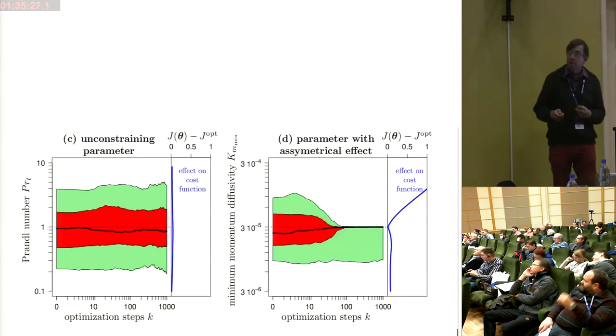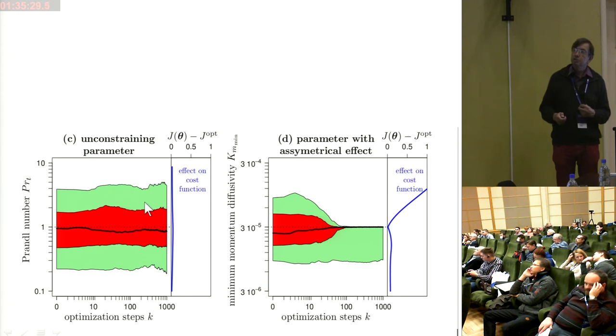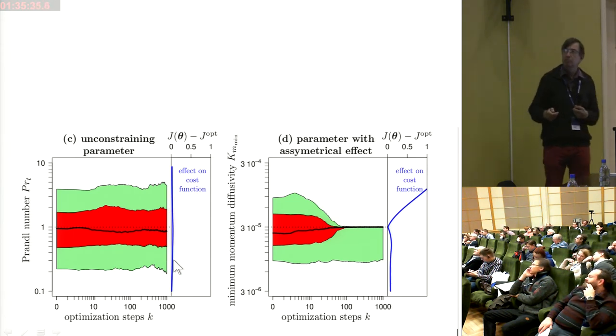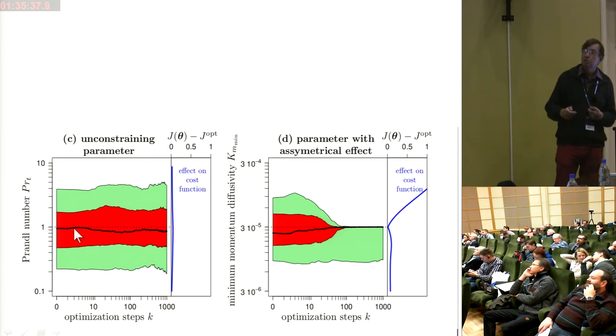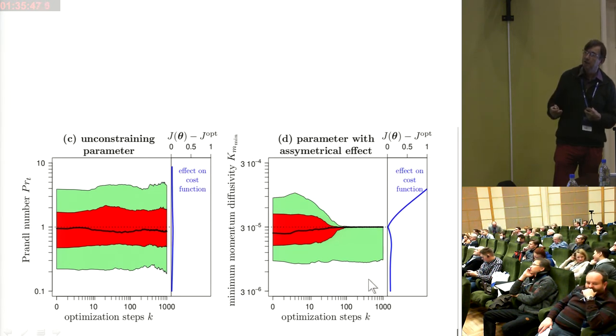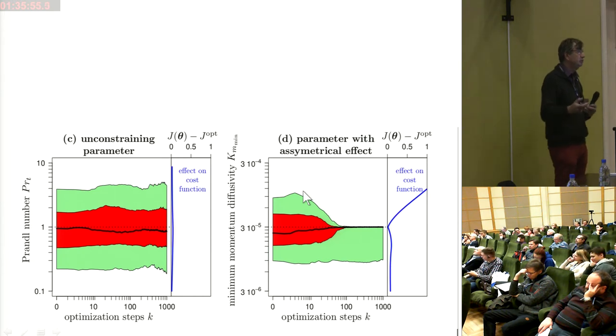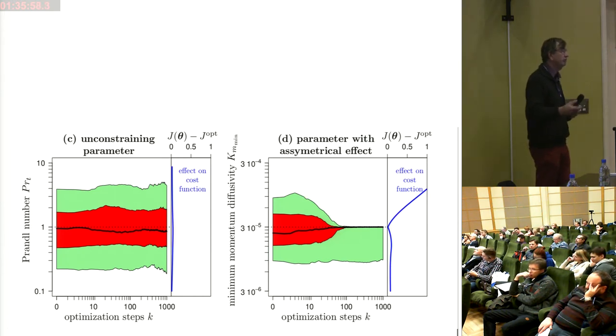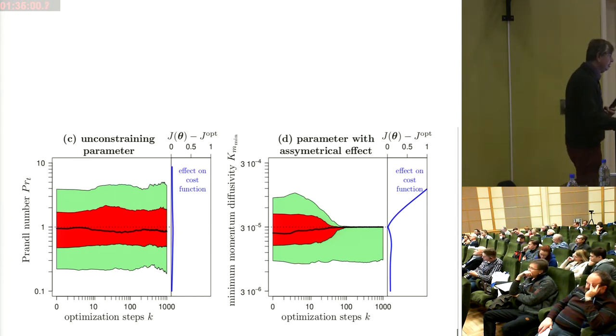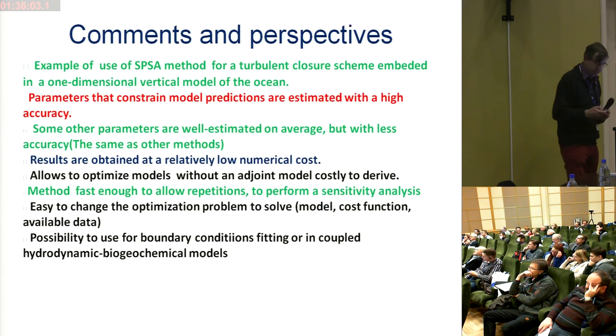If we consider the Prandtl coefficient, which doesn't play any role, in this case, in this case, with very weak stratification, so you can see that there is no effect. And if we can, if we take the coefficient of minimum eddy viscosity, you can see that we have some asymmetrical behavior, because this coefficient will play some role in this part, and absolutely not in the other part, because eddy viscosity, background eddy viscosity will be larger than the minimum one, so we don't need. So this is just an effect of this.